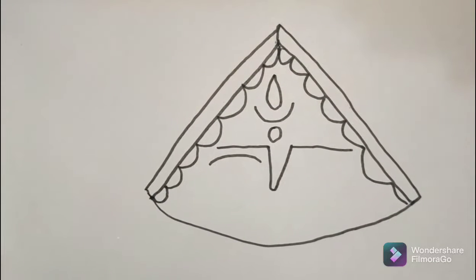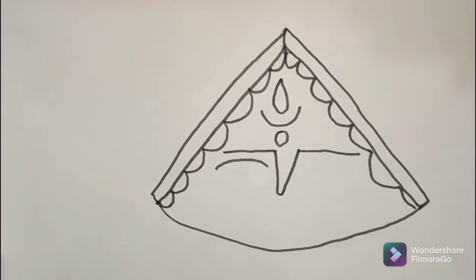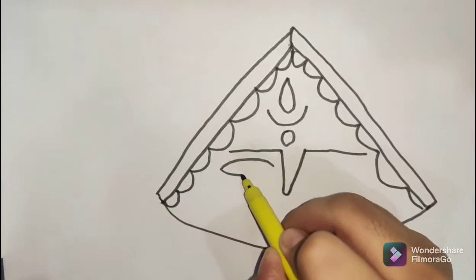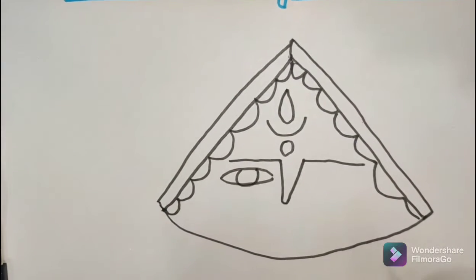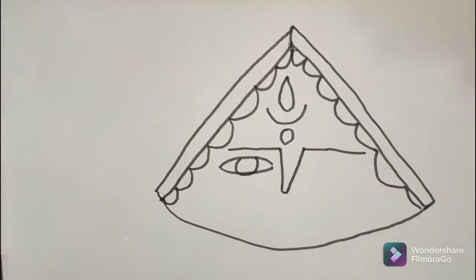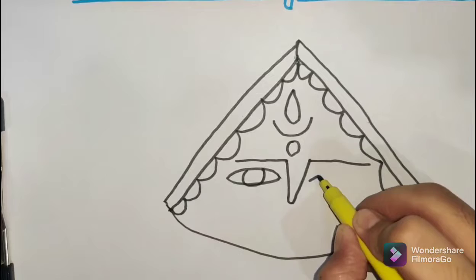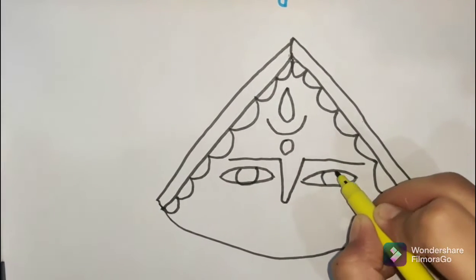We need to make long almond-like eyes. An easier word is an oval with sharp edges, not curved. Now as an eyeball, we need to make another oval and another ball.